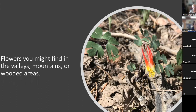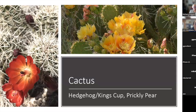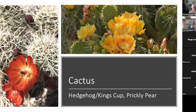We'll look at some flowers you might find in the valleys, mountains, or wooded areas across the Rio Grande — by no means a comprehensive list. From lower elevations, we have our cactuses: hedgehog or king's cup cactus and prickly pear. There are tons of different prickly pear and hedgehog cactus species. The hedgehog cactus — the rounder, more ball-like ones — have mostly flowered by now at lower elevations. I was on a run this morning and saw a prickly pear just beginning to bloom, so they're coming on starting now.